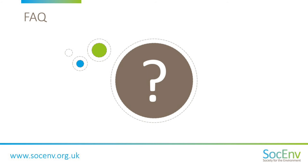Thank you very much, Jeff. Hopefully that gives people an idea of how to become a Registered Environmental Practitioner. What we have now is a few frequently asked questions. So Jeff, what does it cost? Initial registration is £60 in the first year and renewal of registration is £30 in subsequent years. That's what we charge for registration — you need to speak to your professional body about what they will charge or potentially charge on top of that.